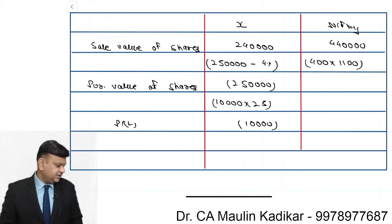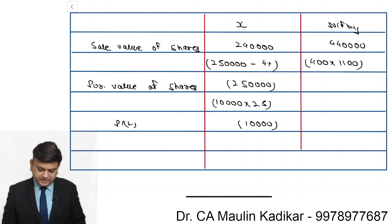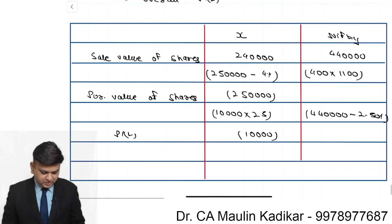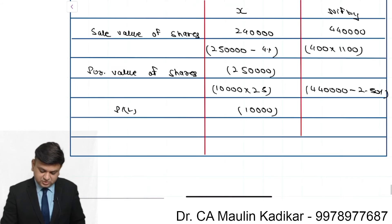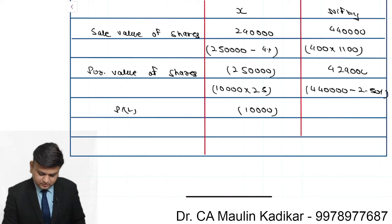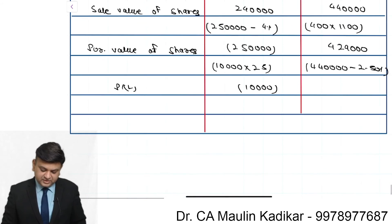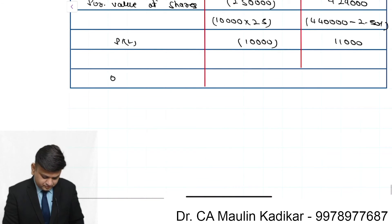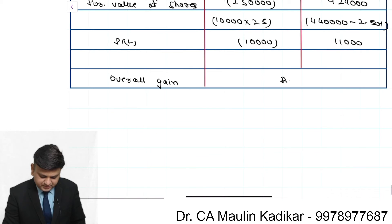The question states that Nifty futures has also dropped by 2.5%. So both are changing in the same direction. The Nifty position: 4,40,000 minus 2.5% = rupees 4,29,000. So over there you make a gain. The amount of the gain is rupees 11,000. Overall, there is a net gain of rupees 1,000.